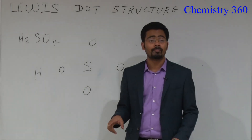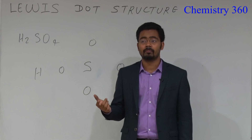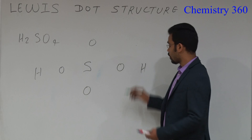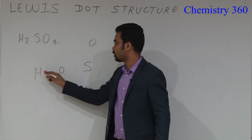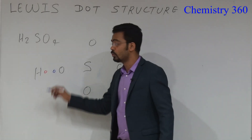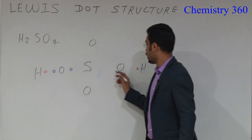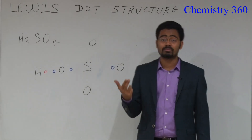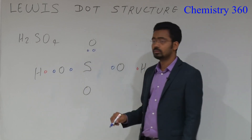Always start from the external atom. Hydrogen can form 1 bond, so it will share only 1 electron. And oxygen has to share 1 electron with hydrogen. We know that oxygen can share a maximum of 2 electrons, so one will share with sulfur here, and here also one will share with sulfur. This oxygen can also share a maximum of 2 electrons, so 2 electrons will form a bond with sulfur.